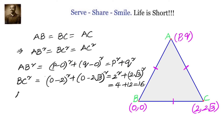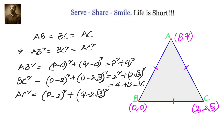AC square is (P minus 2) whole square plus (Q minus 2 root 3) whole square. Now equating AB square to BC square, we get P square plus Q square equals 16. This is our first condition.